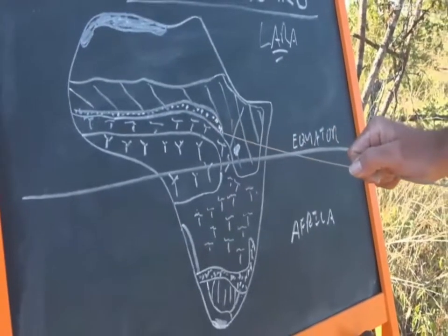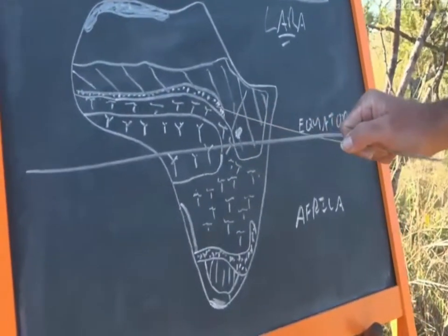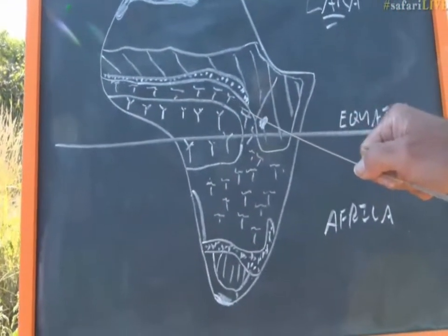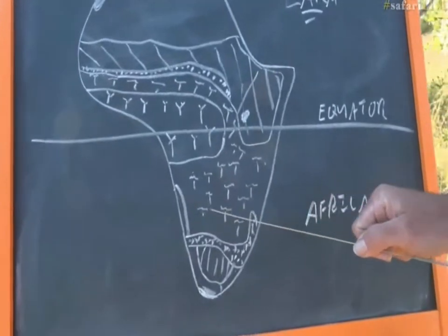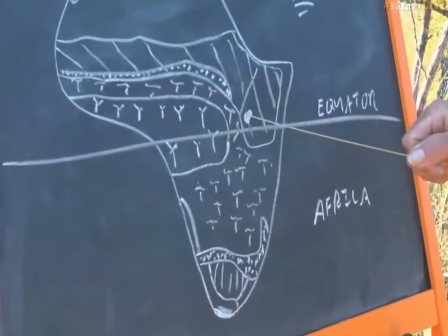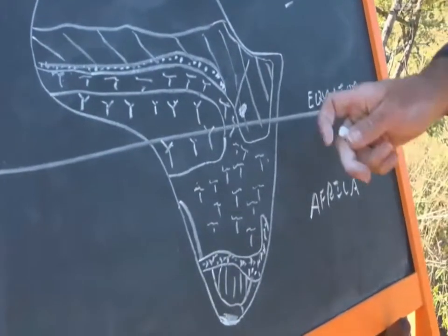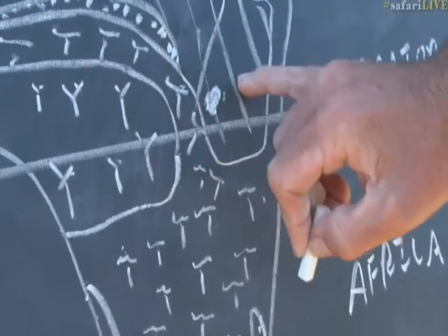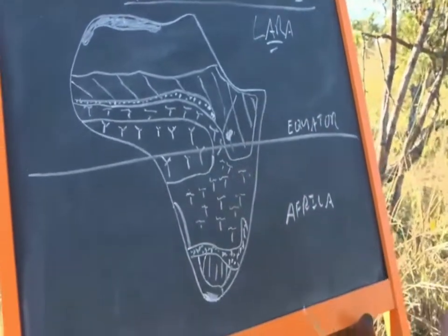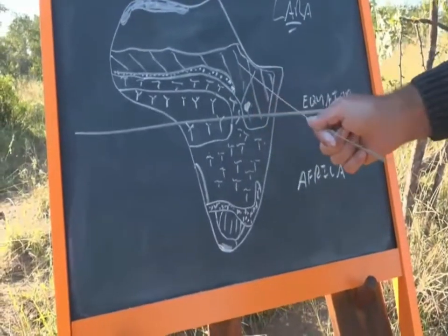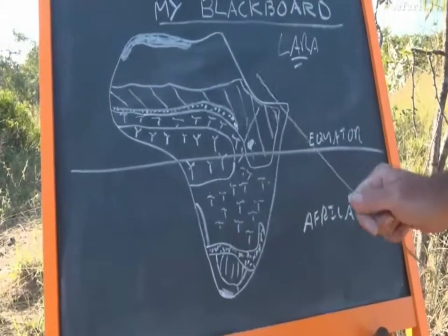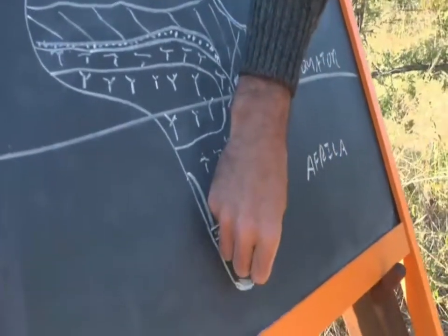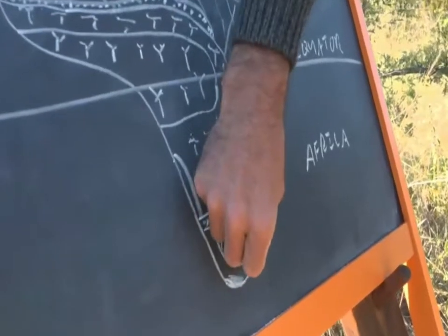Then you go into slightly moister grassland savannah, and then into the more familiar kind of landscape we have here — woodland savannah. That's what you see around here and also in the Mara. Although the Mara appears to fall in the Sahel region on the map, it actually falls much more into woodland savannah — it's much wetter than most of the Sahel regions.